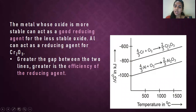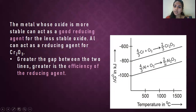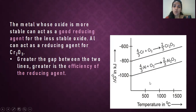Coming on to the first example. One thing we need to remember is the metal oxide which is placed below in the Ellingham diagram is more stable — in other words, the metal oxide which has a higher negative value of ΔG⁰ is more stable. In this diagram it is clear that aluminium oxide, placed below chromium oxide, is more stable. The element which forms the most stable metal oxide can act as a reducing agent for the less stable metal oxide.